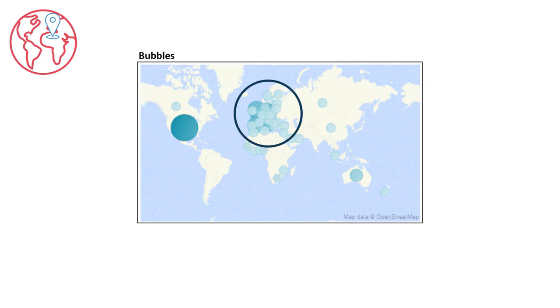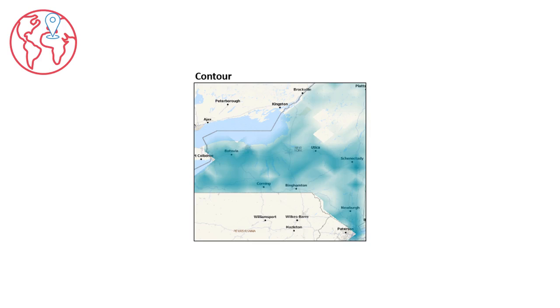Sometimes, however, the size of the bubble can overlap with other bubbles, making the chart difficult to read. Contour maps display shaded regions over a geographic region. These are best used to show very dense data.